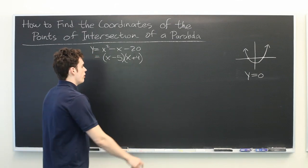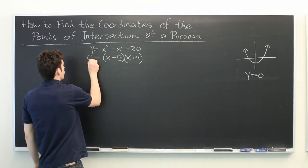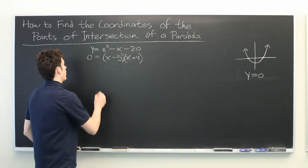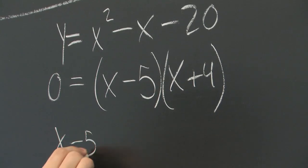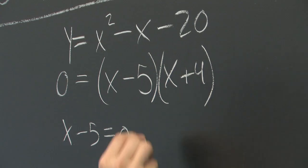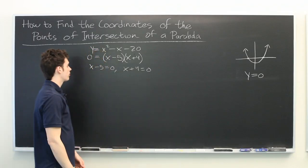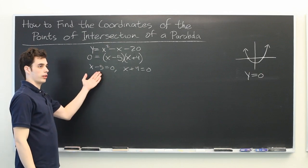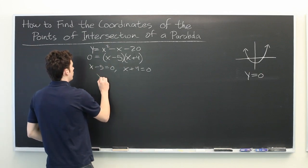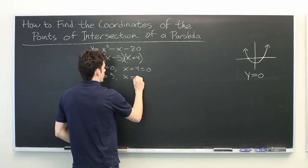So if we're trying to find where y equals 0 and we want this to be equal to 0, that will either happen when x minus 5 is equal to 0 or when x plus 4 is equal to 0. Well from here it's fairly simple to solve for x. We have x equals 5 and x equals negative 4.